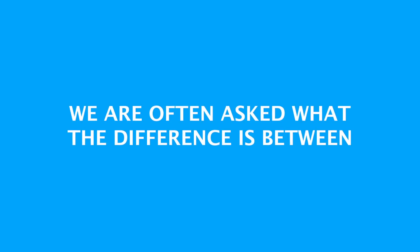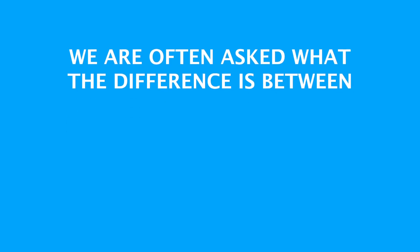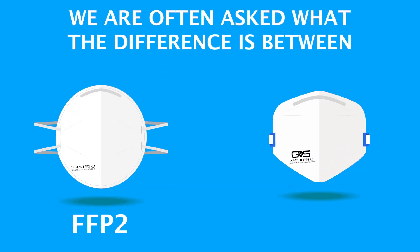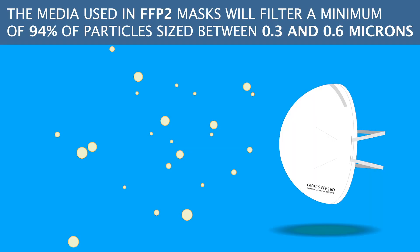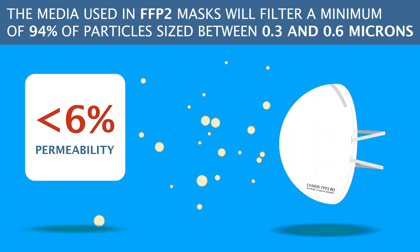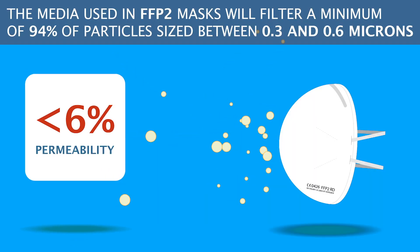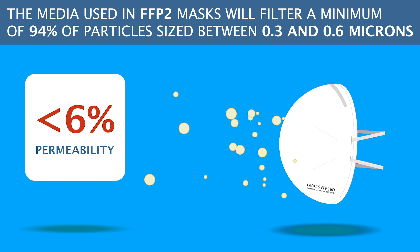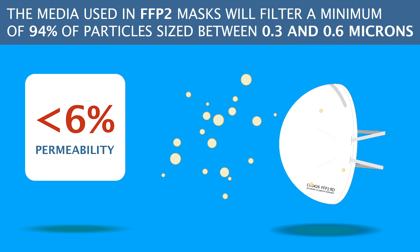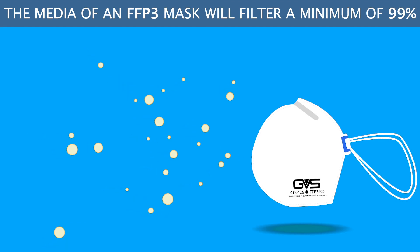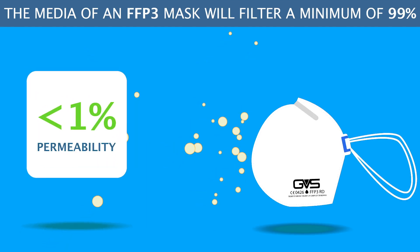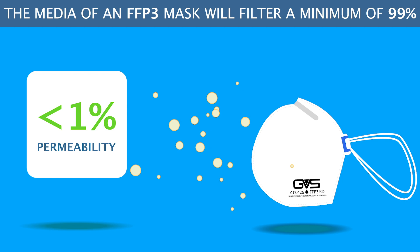We are often asked: what is the difference between an FFP2 and an FFP3 mask? There are several things you should know. The media used in FFP2 masks will filter a minimum of 94% of particles, sized between 0.3 and 0.6 microns. The media of an FFP3 mask will filter a minimum of 99%.